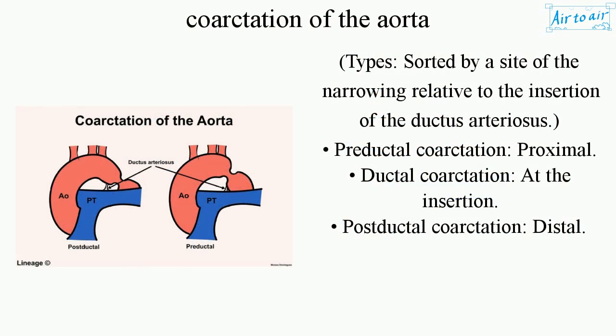Types are sorted by the site of the narrowing relative to the insertion of the ductus arteriosus: Preductal coarctation (proximal), Ductal coarctation (at the insertion), and Postductal coarctation (distal).